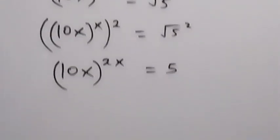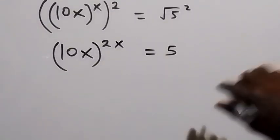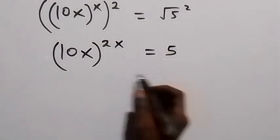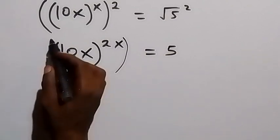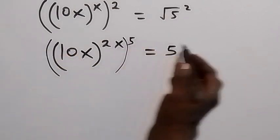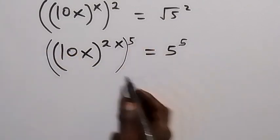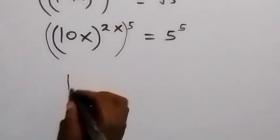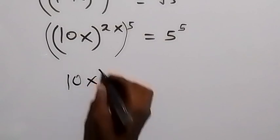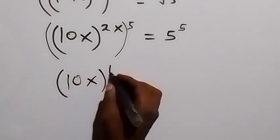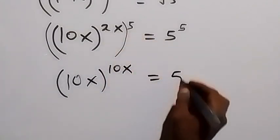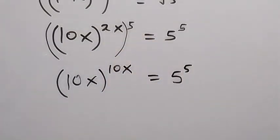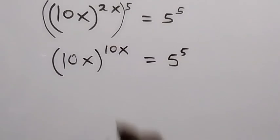In the next step, let's raise both sides to the power of 5. We raise this side to power 5 and also this side to power 5. The powers multiply, so this becomes 10x raised to power 10x — since 5 times 2x is 10x — equals 5 raised to power 5.